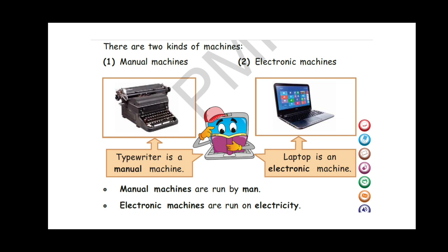Now, there are two kinds of machines: manual machines and electronic machines. From the name, we can understand that manual machines are run by man, whereas electronic machines are run on electricity.